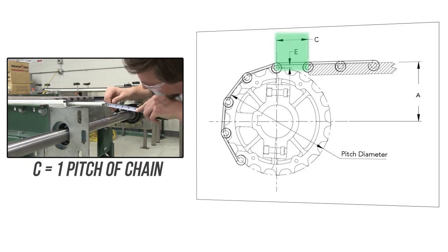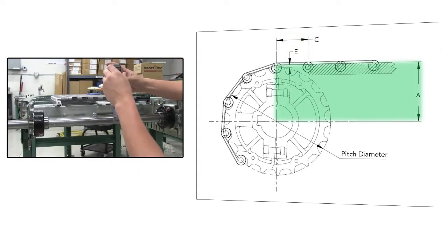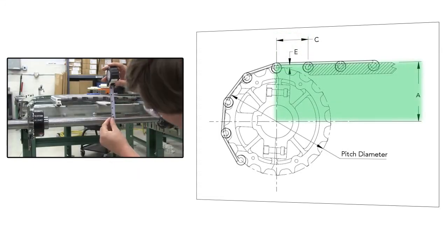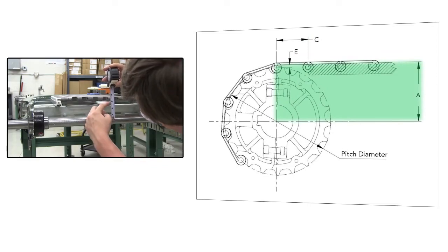The proper C dimension should be equal to the length of one pitch of chain. The vertical A dimension is defined as the center line of the shaft measured to the top of the wear strip.